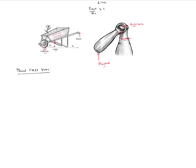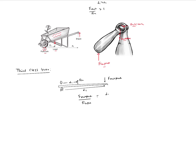In a third class lever, the input is between the fulcrum and the output. Using d1 as the distance from fulcrum to input and d2 as the distance from fulcrum to output, the equilibrium analysis still gives F-output over F-input equals d1 over d2. But here d1 is less than d2, so this ratio is less than 1 - meaning there is no mechanical force advantage.